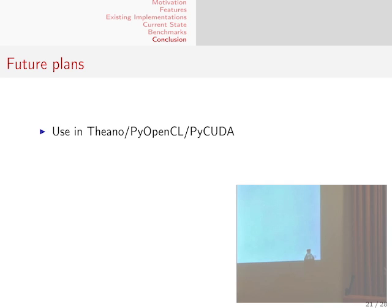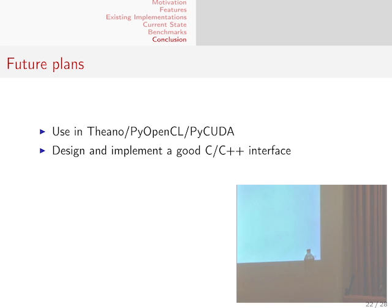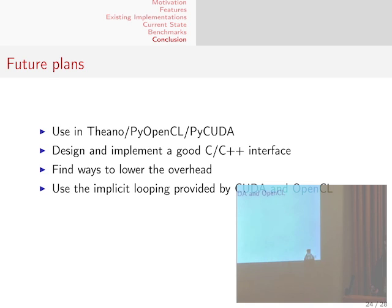Our future plans for this project are to use it in Theano, PyCUDA, and PyOpenCL — a natural fit since most of the authors are also developers of those. We would also like to see it used in other projects. We plan to design and implement a good C or C++ interface, and may need help from C developers in the community. We want to find other ways to lower overhead similar to element-wise collapsing, use implicit looping provided by CUDA and OpenCL for faster loops, and ultimately achieve wide adoption across libraries. We encourage library authors to come discuss using this, or supervisors to inform their students about the project.